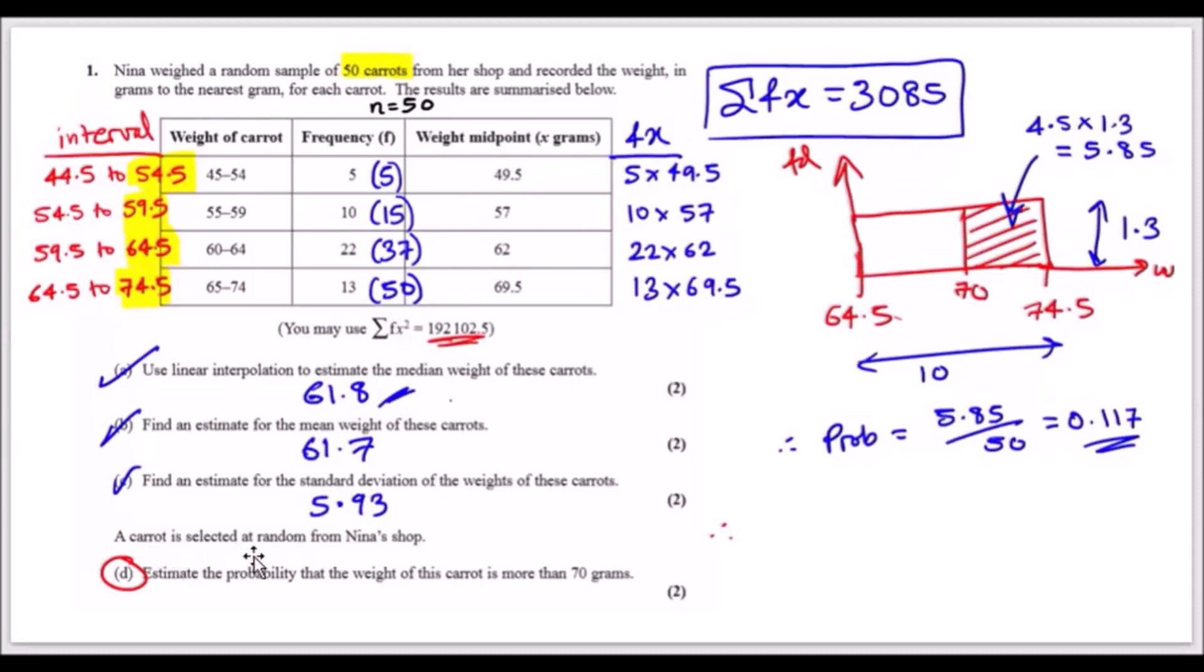A carrot is selected at random from Nina's shop. Estimate the probability that the weight of this carrot is more than 70 grams. You've got to be very diligent here. I looked at the very last interval because that's where the 70 grams lie. I drew this as a rectangle across, visualizing it. I treated the width as the class width and the height as the frequency density. Drawing the rectangle, I cut down at 70 in the middle and realized this is the area of interest.